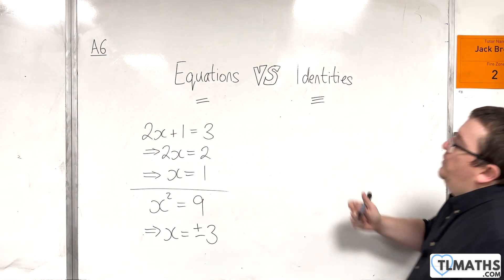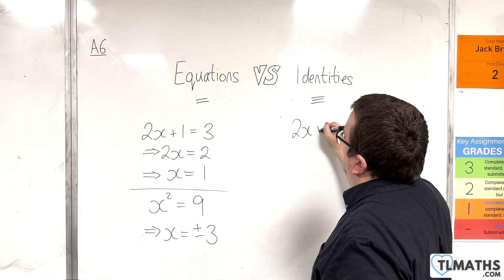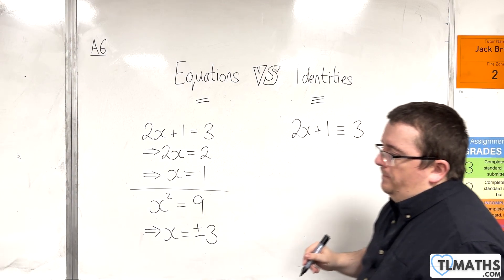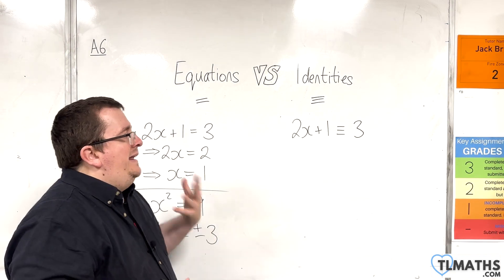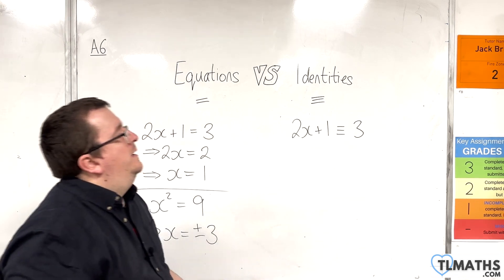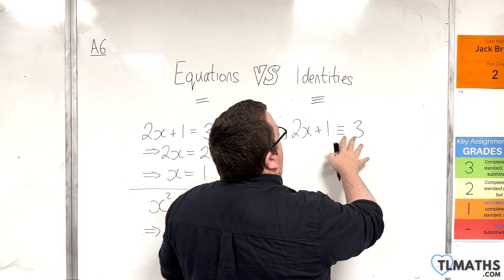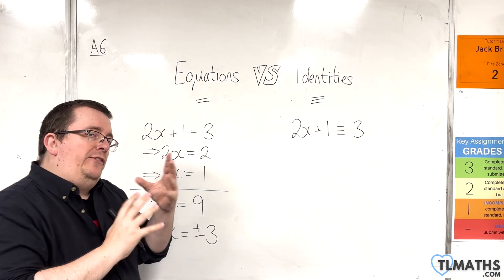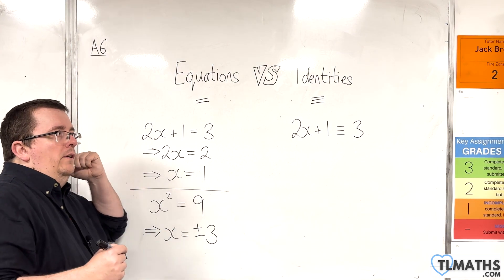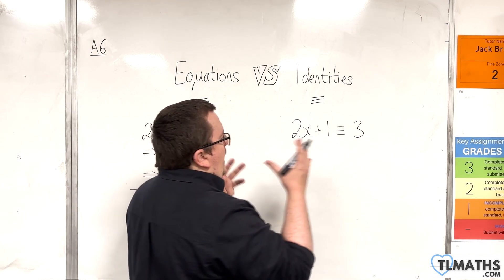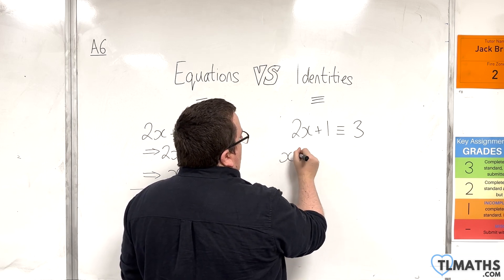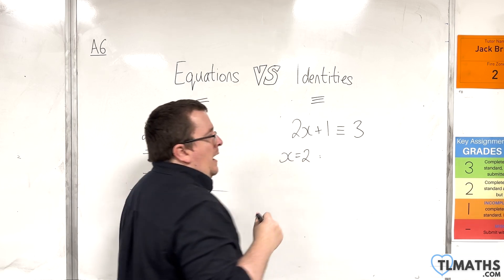Now, the moment that if I had something like 2x + 1 and then I put the equivalency symbol in and then the 3, then what this does is it leads to nonsense. Because what this would be suggesting is that 2x + 1 is always 3 no matter what value of x you substitute in. Now of course, that wouldn't make any sense because if this was true for all values of x, I could choose a value of x. I could go, right, x = 2. What happens?